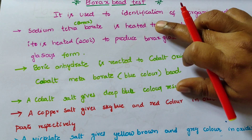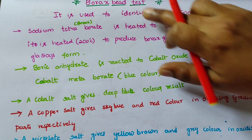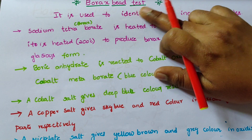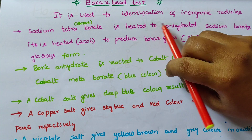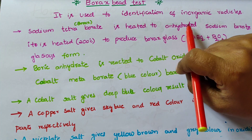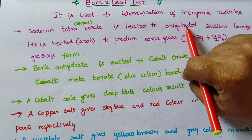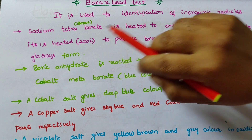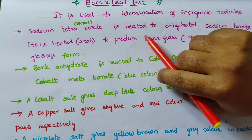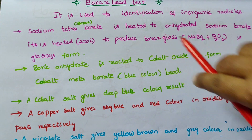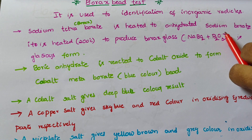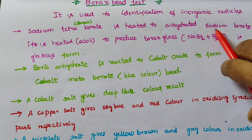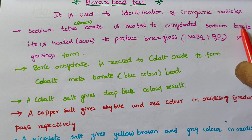So, the Borax bead test is used for the identification of inorganic metal radicals. Sodium tetraborate is heated to form anhydrous sodium borate, which is then used to produce borax glass.